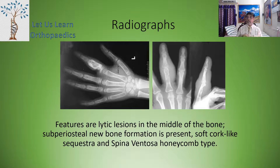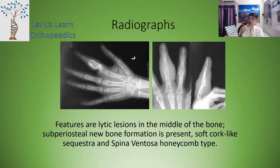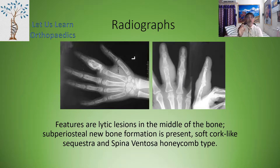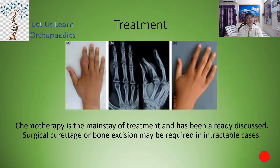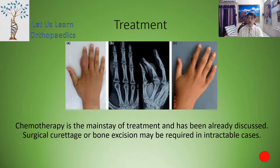On radiographs, the features are lytic lesions — you can see in the index finger proximal phalanx in the first x-ray. There is a lytic lesion in the middle of the bone, subperiosteal new bone formation may be present, soft cartilage-like sequestra, and a spina ventosa honeycomb type appearance. Chemotherapy is the mainstay of treatment, as already discussed in previous lectures on bone and joint skeletal tuberculosis. Surgical curettage or bone excision may be required in intractable cases.